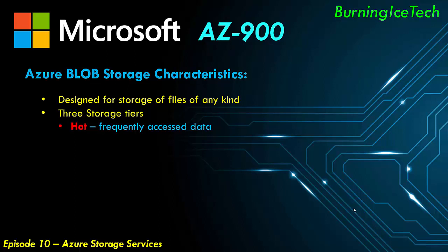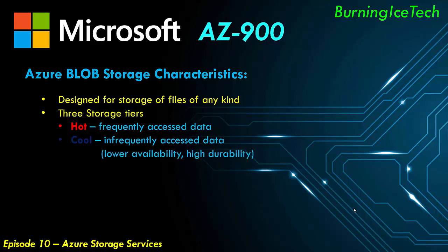If your solution has files that are accessed less frequently — that's the keyword, less frequently — then you should opt for the second option, which is called cool storage. With the cool tier you get lower availability but higher durability, reduced performance, and a significant discount on price. You can use cool storage for backups, old versions of your application, or any data you don't access regularly.